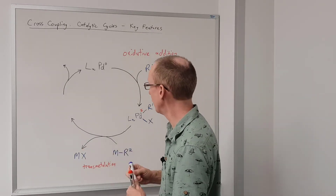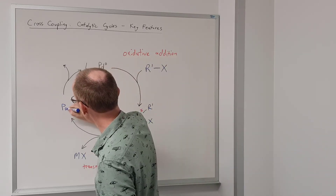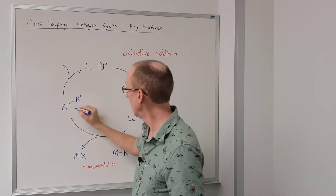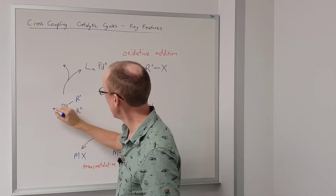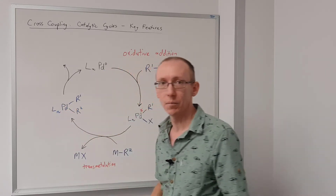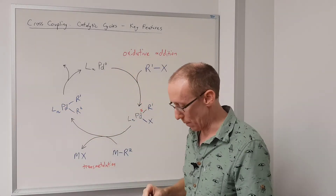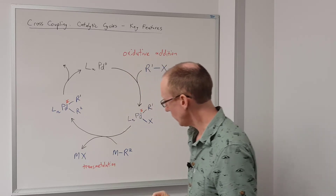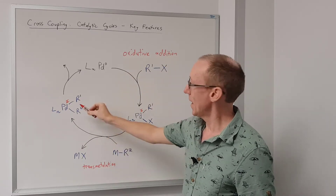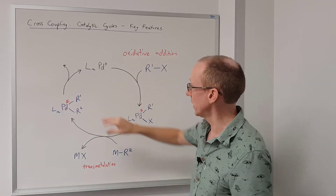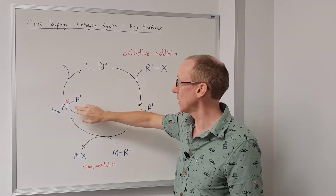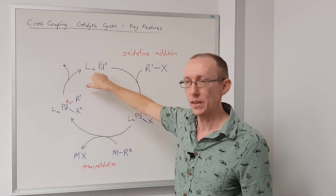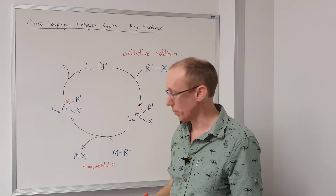Drawing this out in blue: we're still at the palladium(II) oxidation state, but now we've got the R1 group and an R2 group, with some number of ligands stabilizing that complex. This is still a palladium(II) species and it's also quite reactive. Generally in most of these cross-coupling reactions we then get a final step to regenerate the active catalyst and to generate a cross-coupled product.